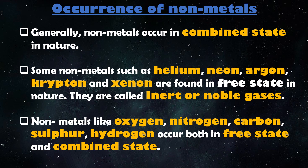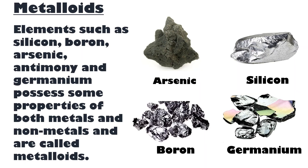There are some elements which cannot be categorized as metals or nonmetals. Such elements are called metalloids. Metalloids possess some properties of both metals and nonmetals. Examples of metalloids include silicon, boron, arsenic, antimony, and germanium.